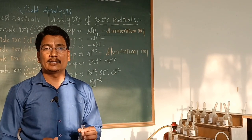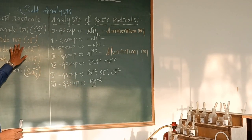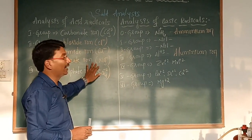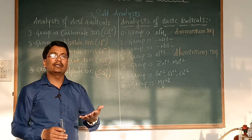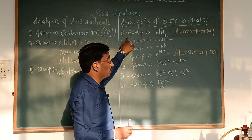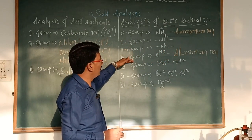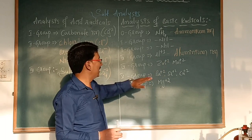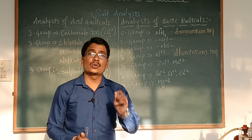That's how we report it. Acid radicals have three groups: first group is carbonate ion, second group is chloride, bromide, and nitrate ions, third group is sulfate ion — the group reagent test is confirmed. For basic radicals: zero group is ammonium ion, third group is aluminum ion, fourth group is zinc and manganese, fifth group is barium, strontium, and calcium, and sixth group is magnesium ion. Thank you.